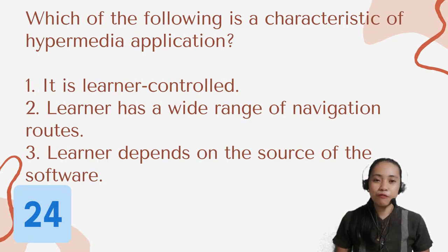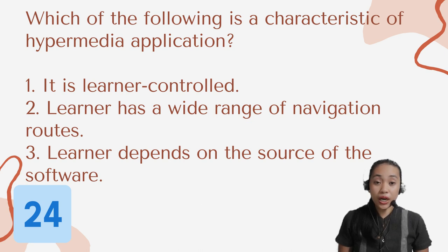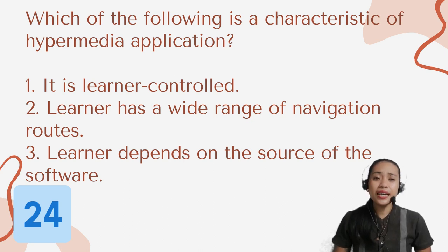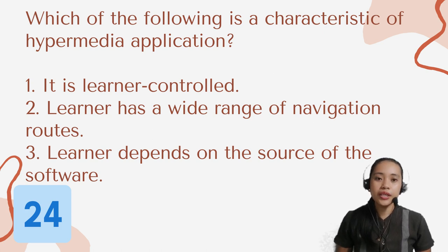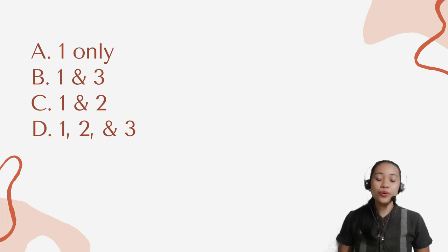Question number 24. Which of the following is a characteristic of hypermedia application? 1: It is learner controlled. 2: The learner has a wide range of navigation routes. 3: The learner depends on the source of the software. Choices: A: One only. B: One and three. C: One and two. Or letter D: One, two, and three.